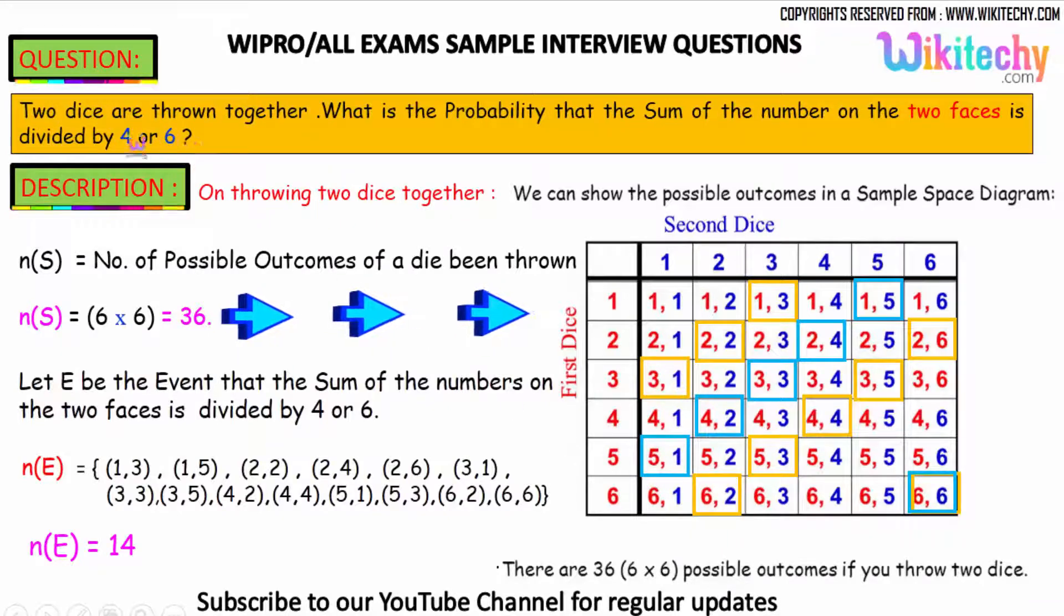(5,3) adds to 8, divisible by 4. (4,4) adds to 8. (3,5) adds to 8. (2,6) adds to 8. These are all the combinations whose sum is divisible by 4.